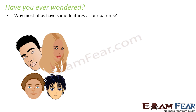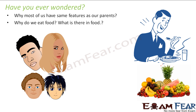Before we even start the chapter, have we ever wondered why most of us behave like our parents? This kid with black hair got it from his father, and the other kid got brown hair from his mother. We inherit physical properties from our parents — our eyes, lips, hair — all things we get from parents. What is responsible for this? We will study all these things in this chapter. It is biomolecules that are responsible for this.